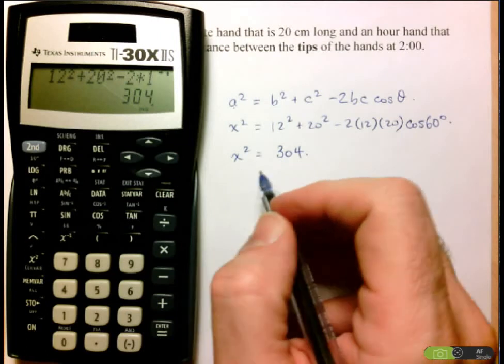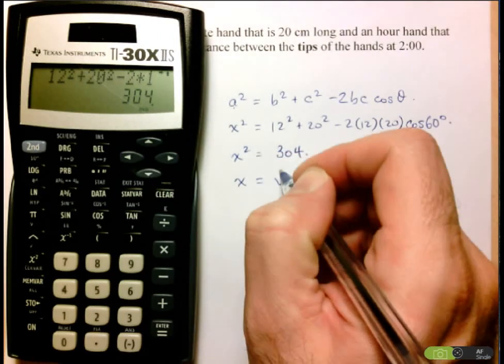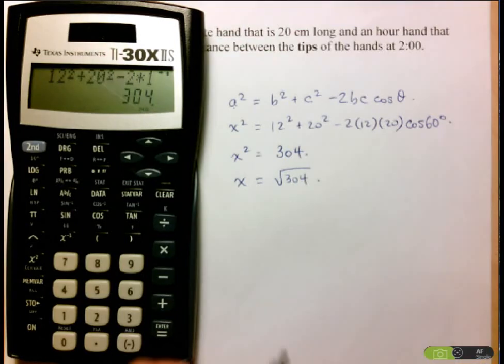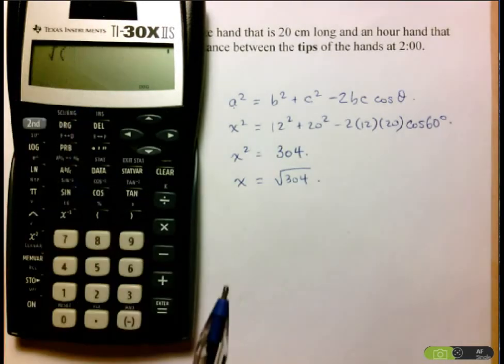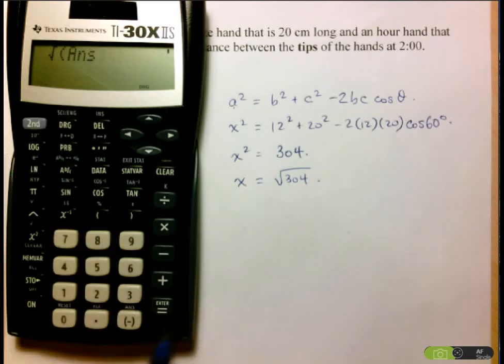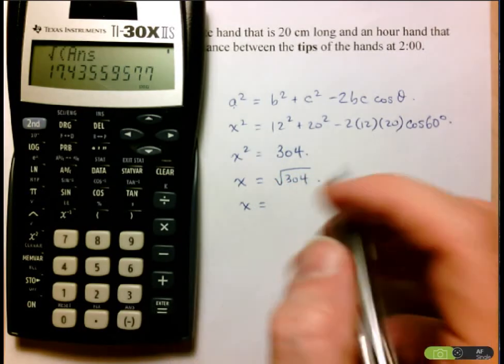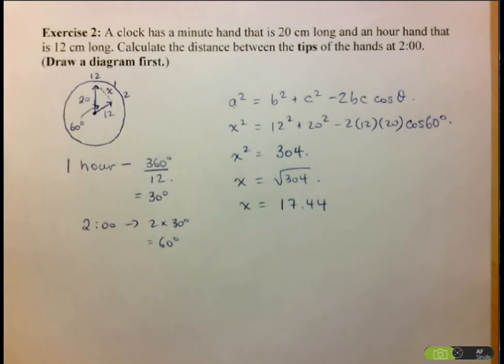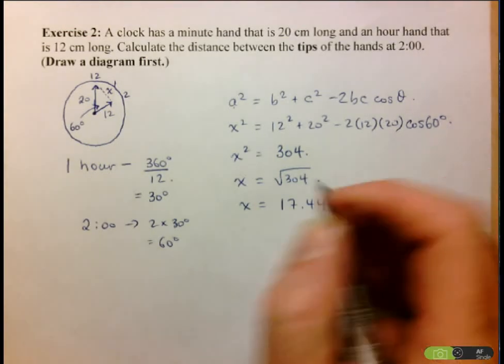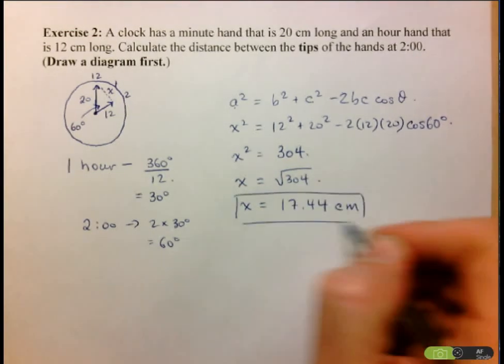And now, of course, to solve for x, I just have to take the square root of both sides, so square root of 304. So here I can either start over and take the square root of 304, but most calculators have an answer button. This one here is just above the negative, if you can see it. So what I can do is the square root of the answer, so second function, and it's going to give me the square root. The square root of 304, and here we'll take two decimal places, so 17.44, and let's just go check our units. Our units are in centimeters, so this will be 17.44 centimeters.